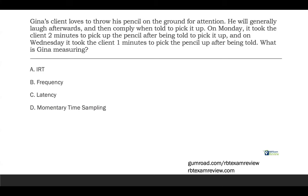Which of the following reinforcement schedules represents continuous reinforcement? This is a super easy question — there are going to be questions on the exam that are complete layups where you should answer in 10 seconds and move on. There's only one schedule that represents continuous reinforcement, which immediately eliminates A, B, and D. The only schedule that represents continuous reinforcement is FR1. FR1 means you reinforce for every occurrence of the target behavior. That's continuous reinforcement. Every other reinforcement schedule is intermittent because not every response is being reinforced. The only answer is C.